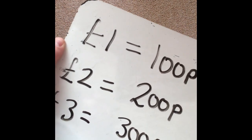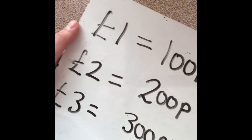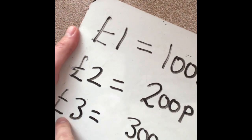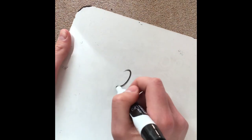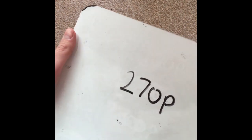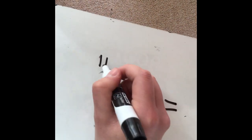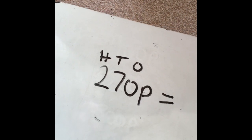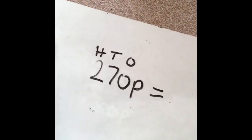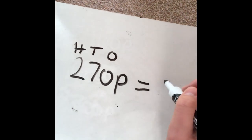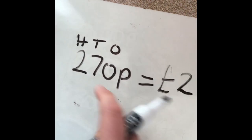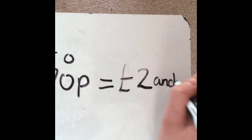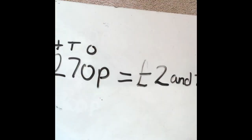So your sheet today — you have got a converting money machine. You will have values that you need to convert either from pence into pounds, or pounds into pence. So for example, you might have 270 pence and you need to convert that into pounds. Think about this as your hundreds, tens and ones. How many hundreds have we got? We've got 2. What did we say 200 was equivalent to? 200 pence is equivalent to 2 pounds. So we're going to have 2 pounds and 70p — that's going to be our value.